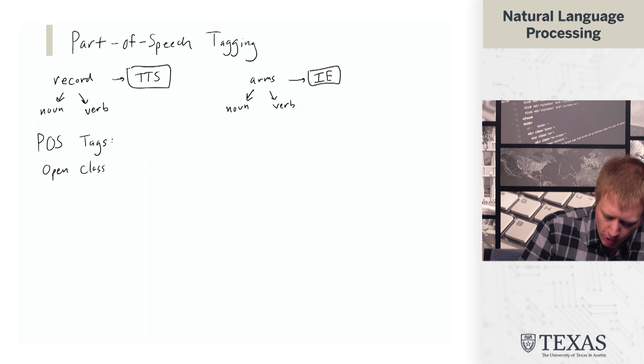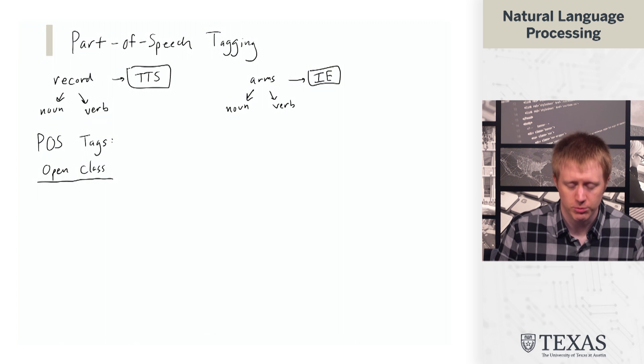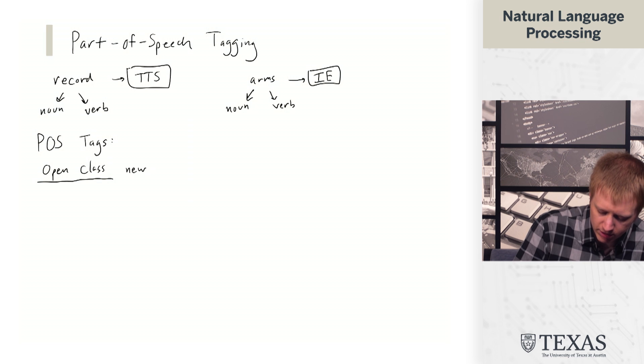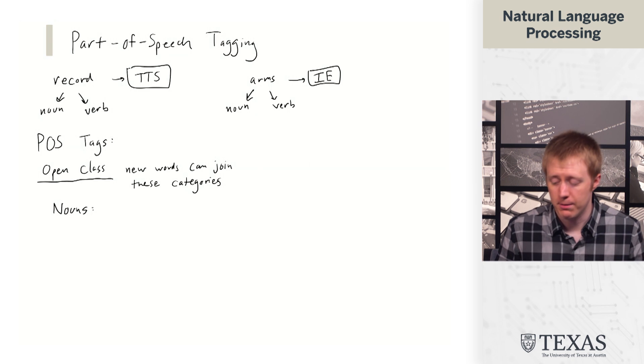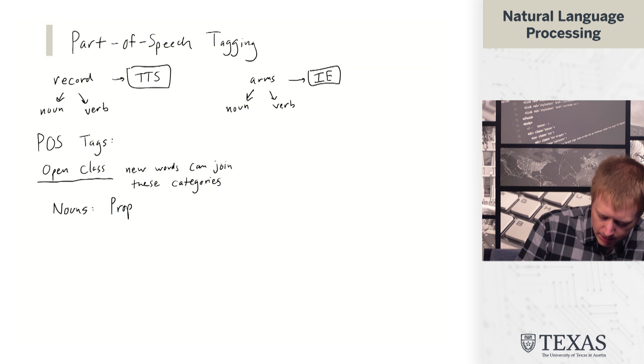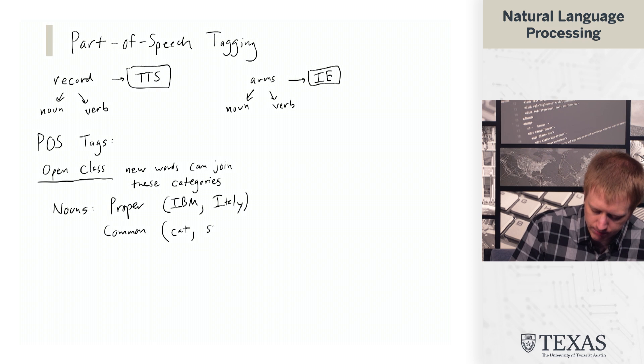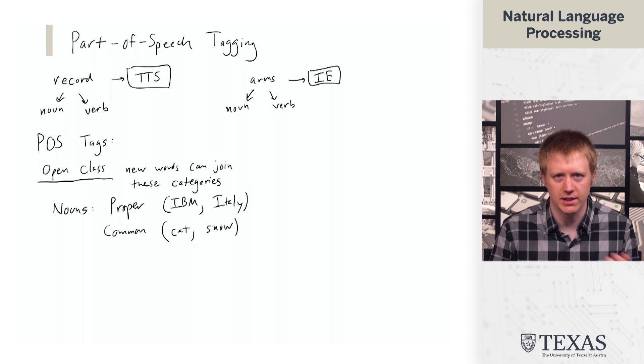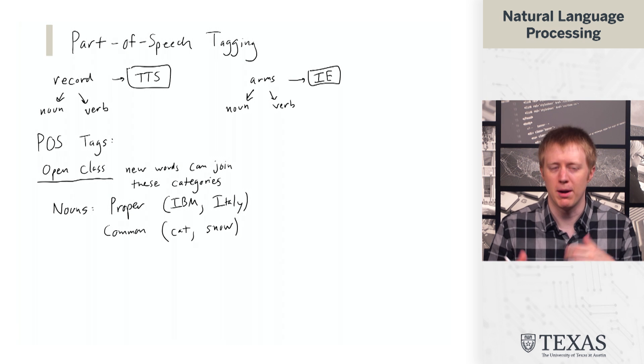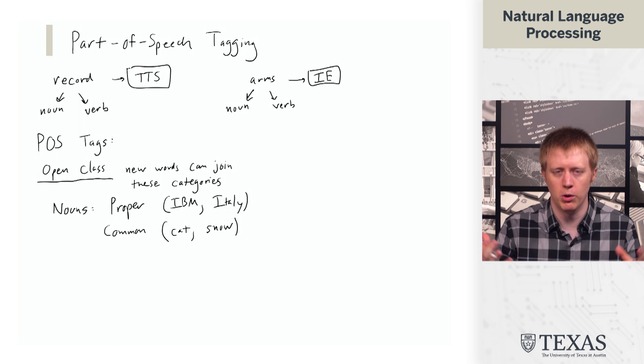There are going to be two rough categories here. We're going to have what are called open class tags, and roughly these are ones where new words can join these categories. An example of an open class part-of-speech tag are the nouns. We have both proper nouns like IBM, Italy, and also what we call common nouns, things like cat or snow. The reason this is open class is because we're inventing new devices all the time. Computers didn't exist and then they did. There's always new words joining this class.